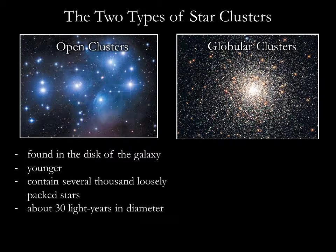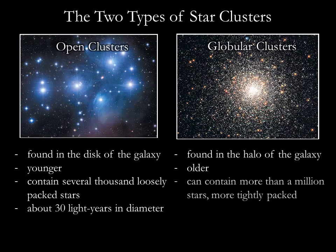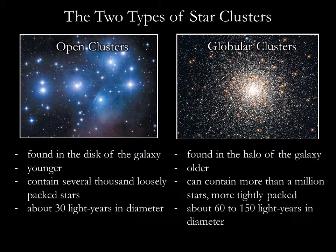Globular clusters are found in the halo of the galaxy, and their stars are among the oldest in the universe. A globular cluster can contain more than a million stars concentrated in the shape of a ball, typically from 60 to 150 light years across.